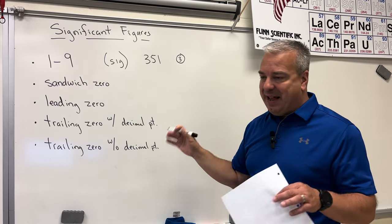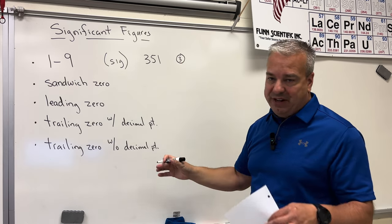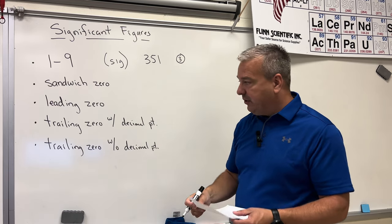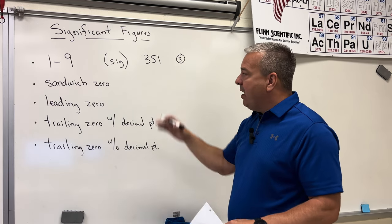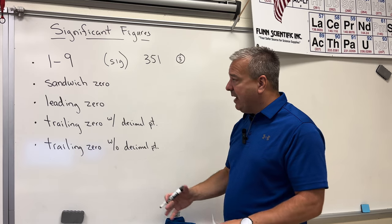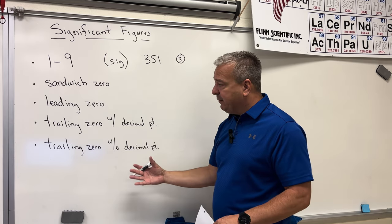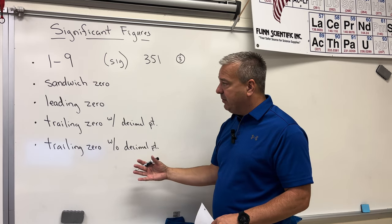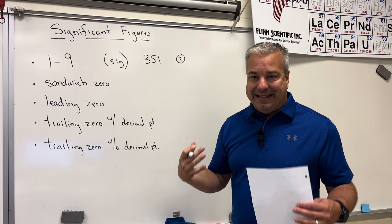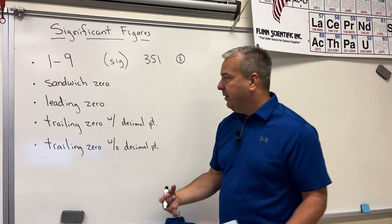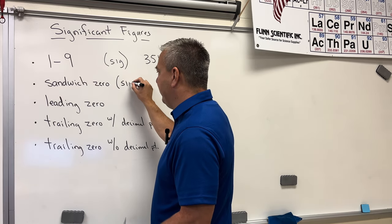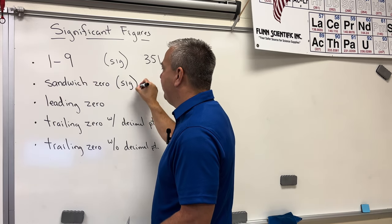The way I do this in class is I just put the number of significant figures in a circle — that tells you how many significant figures there are. I just don't want to write SF, SIGFIG, or significant figures; I just put it in a circle. The next type of issue is dealing with different types of zeros. The first one we'll talk about is what I call a sandwich zero — and sandwich zeros count. They are significant.